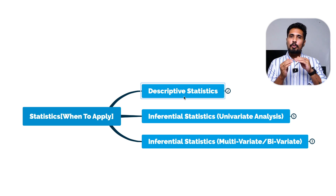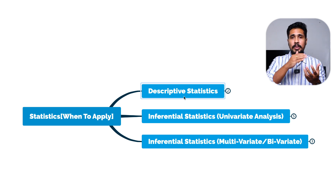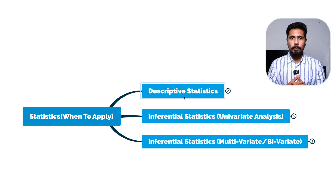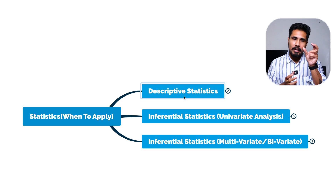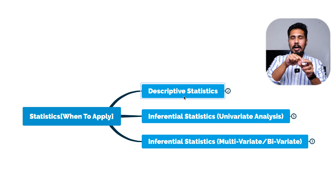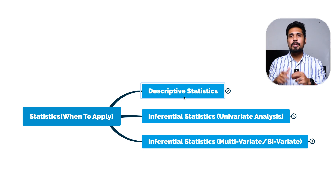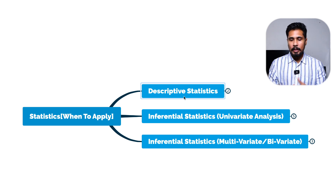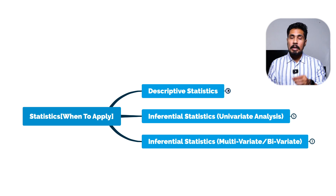Inferential statistics is used to make decisions. Based on our analysis, we try to make decisions on top of our population. For example, we take a sample, analyze it, and make decisions about the entire population. That is where we use inferential statistics — and we'll be going deep into it.